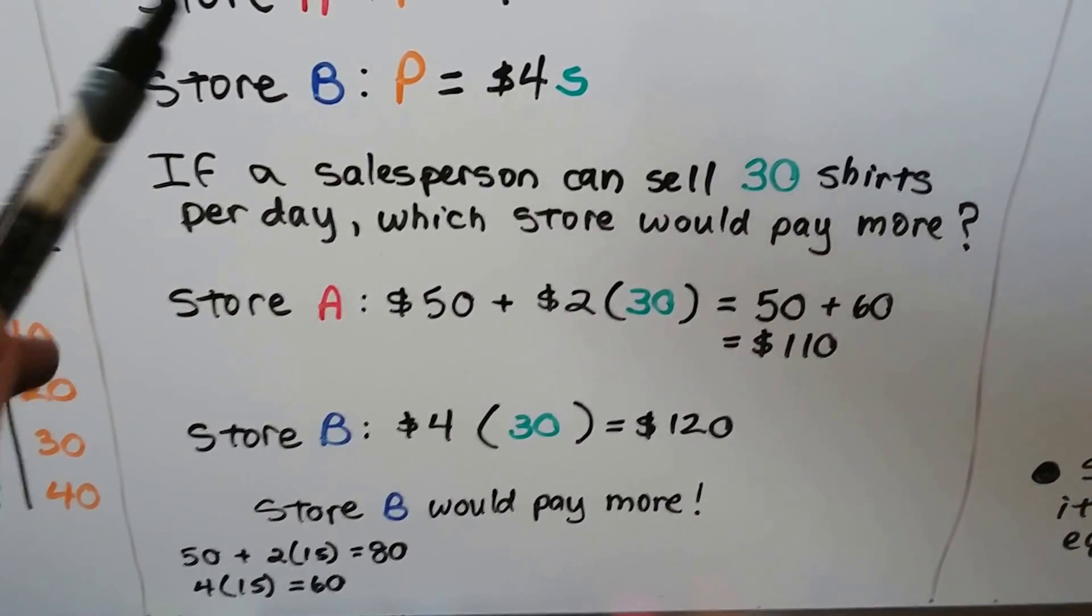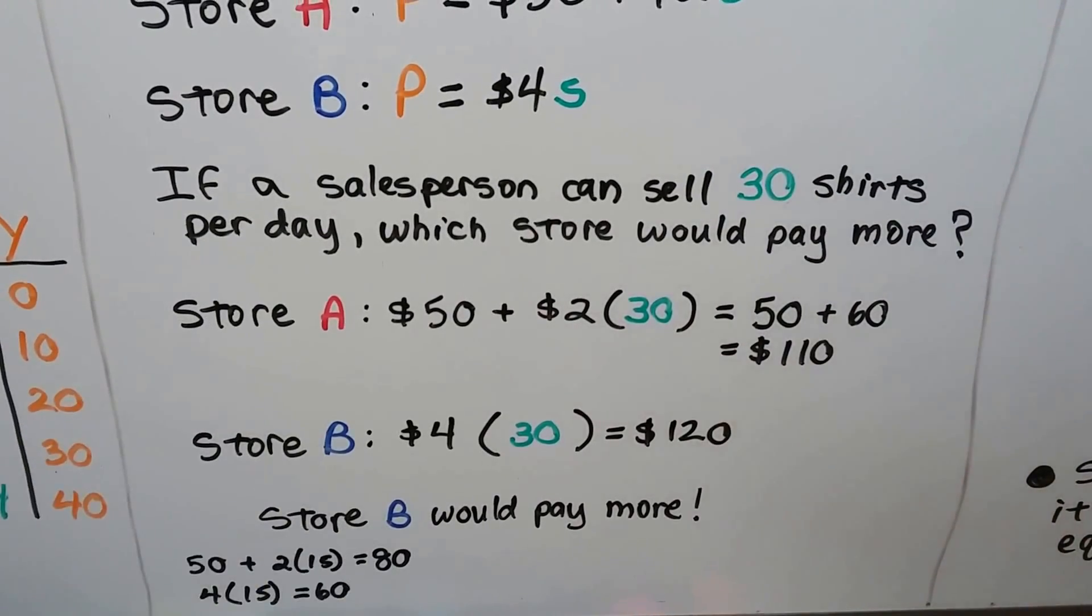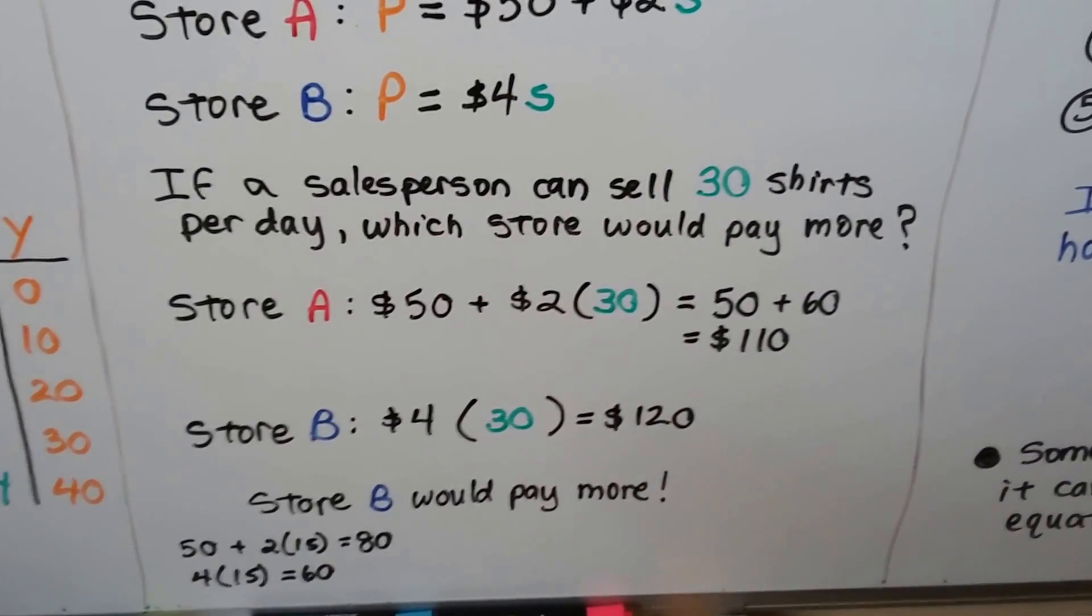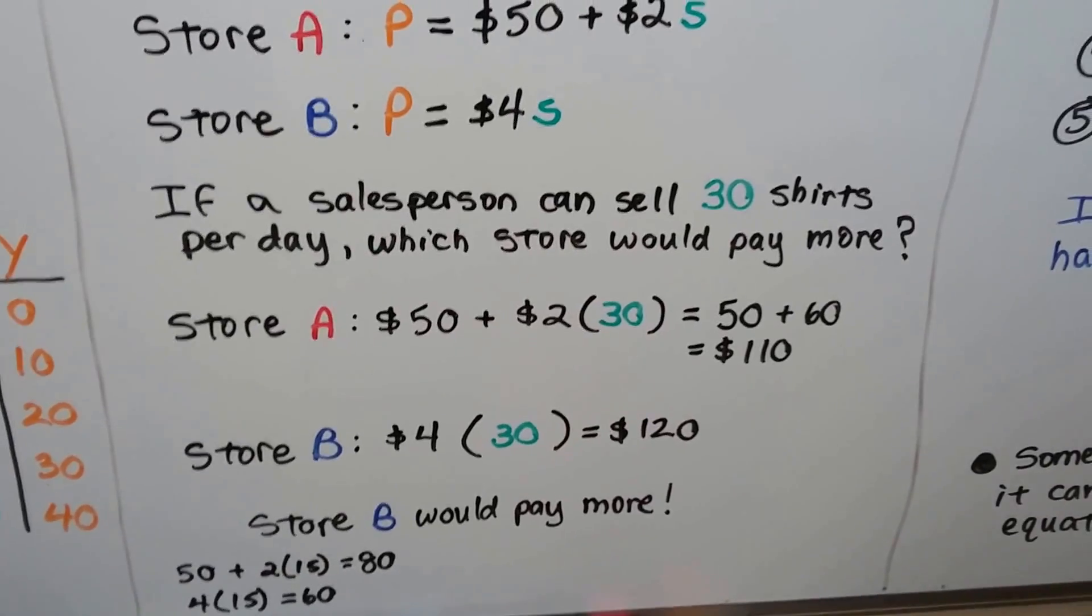It gets to a point where there's a tipping point where store A would end up being better pay because of that $50 base pay. But that's a function because as this changes, the pay changes.